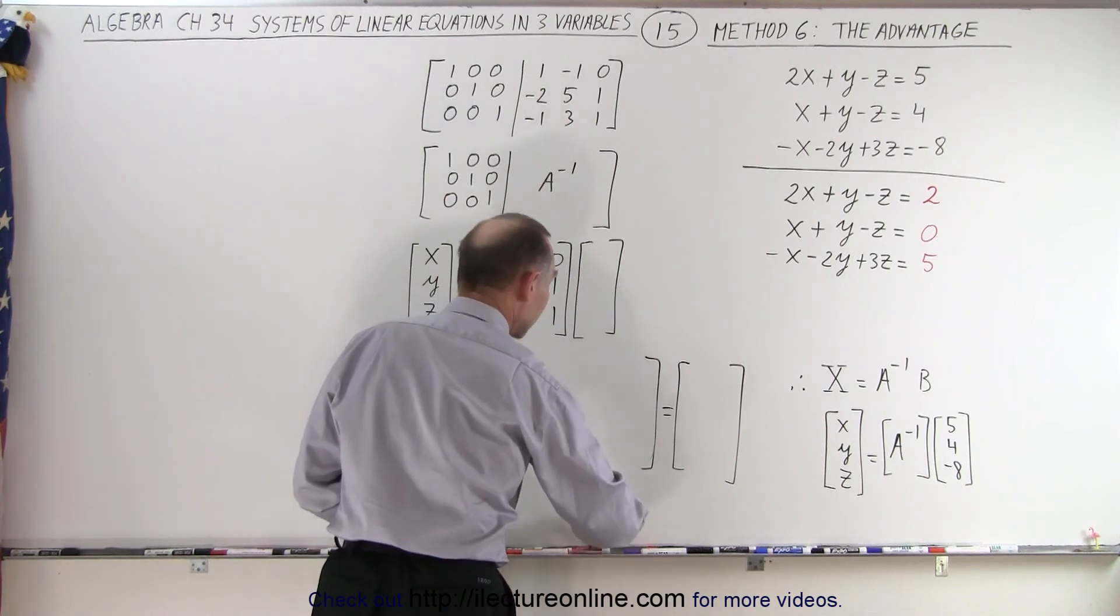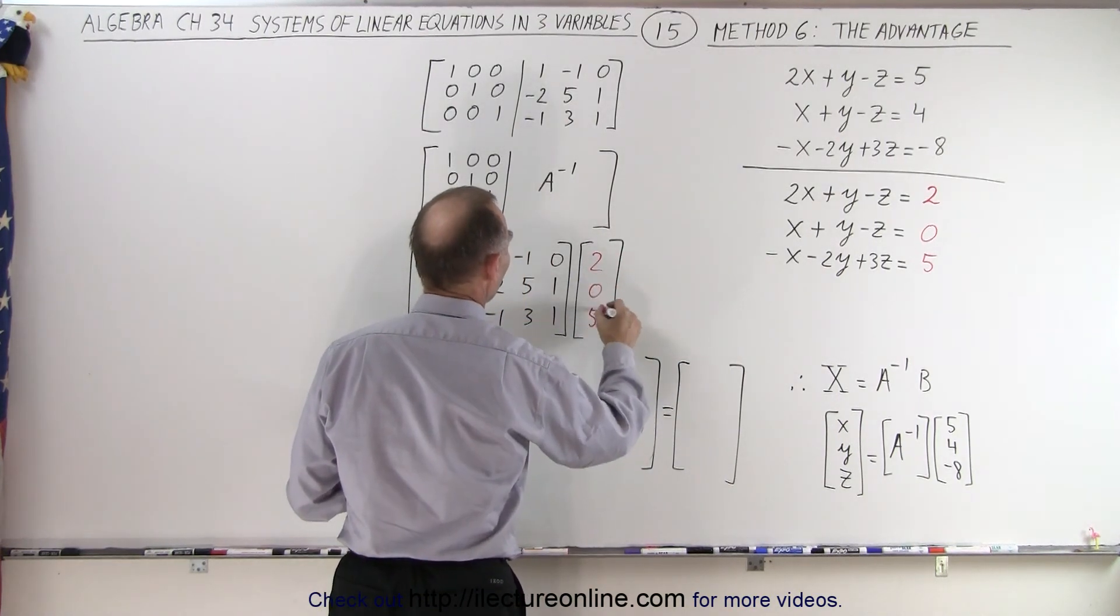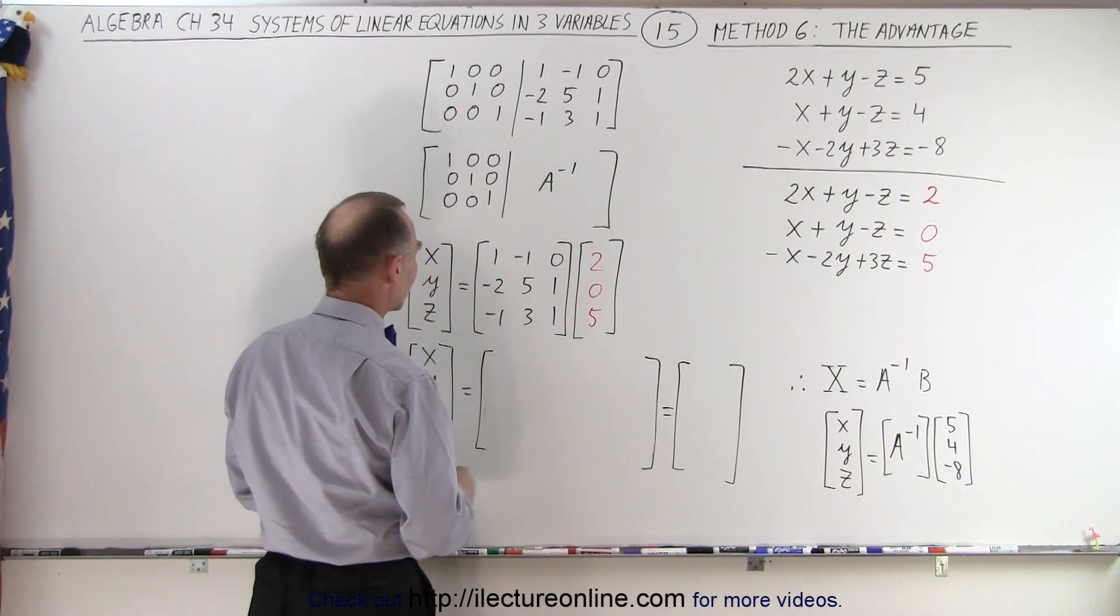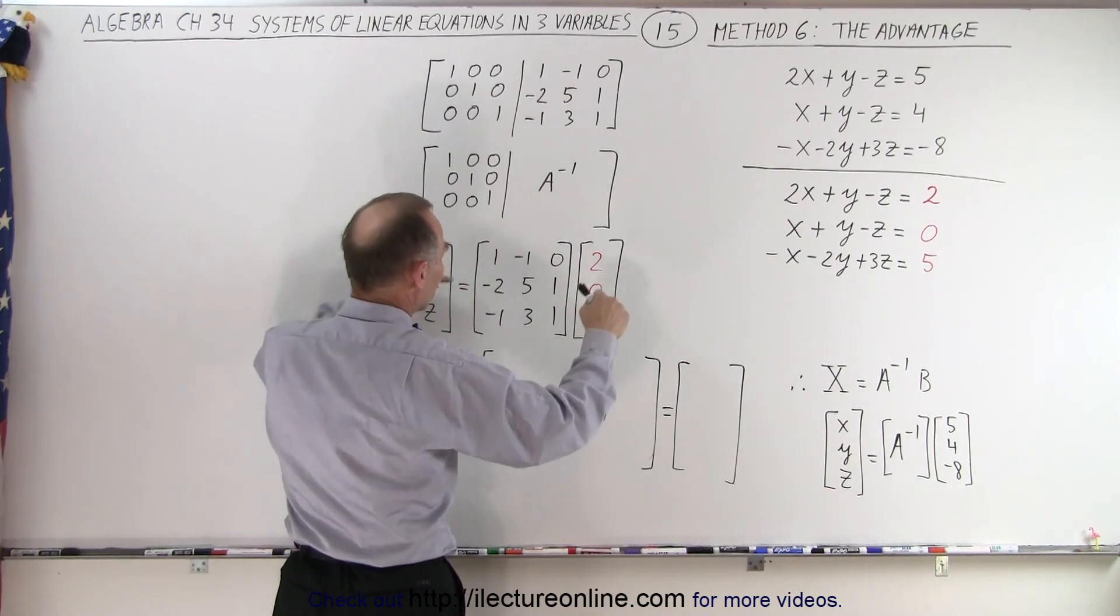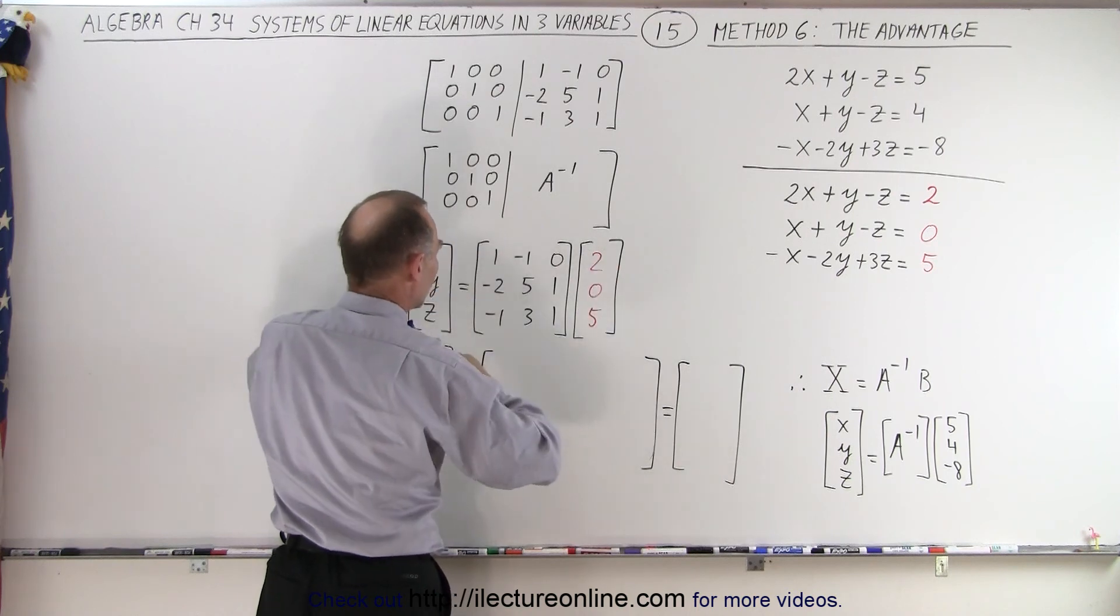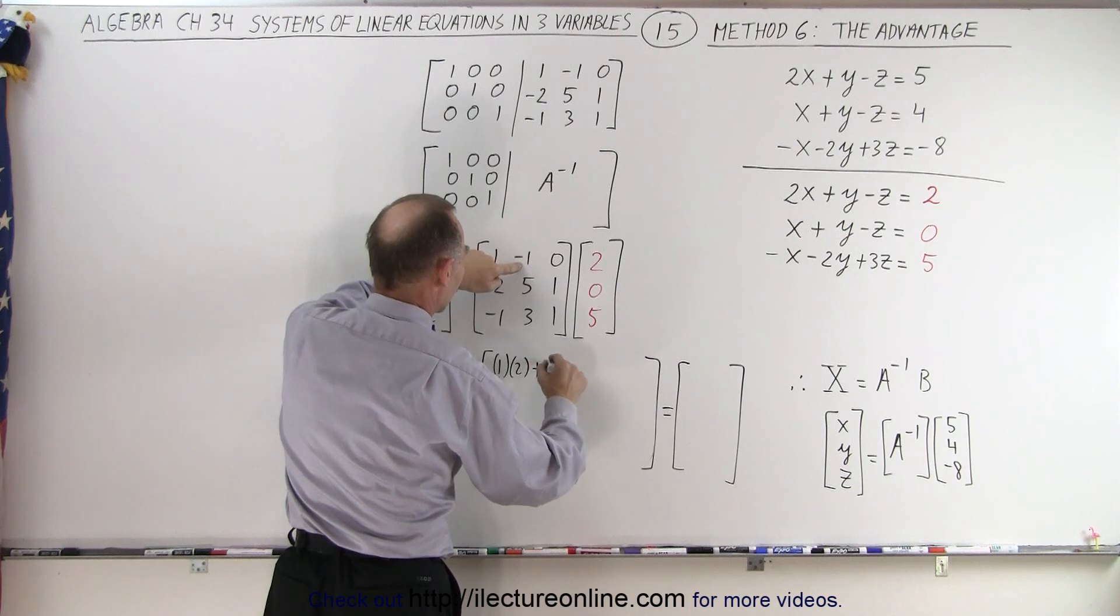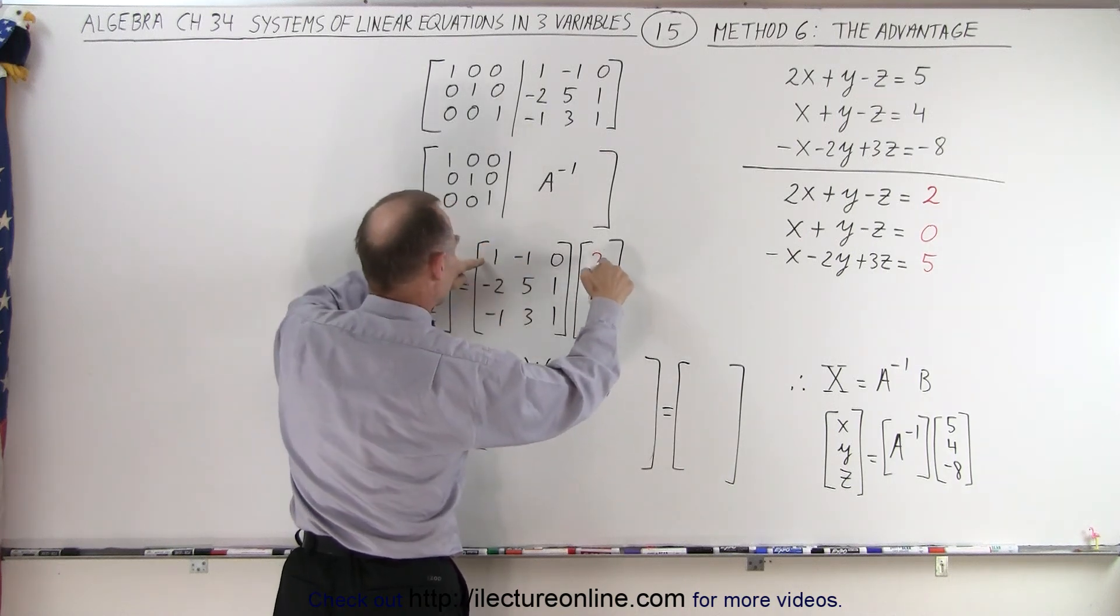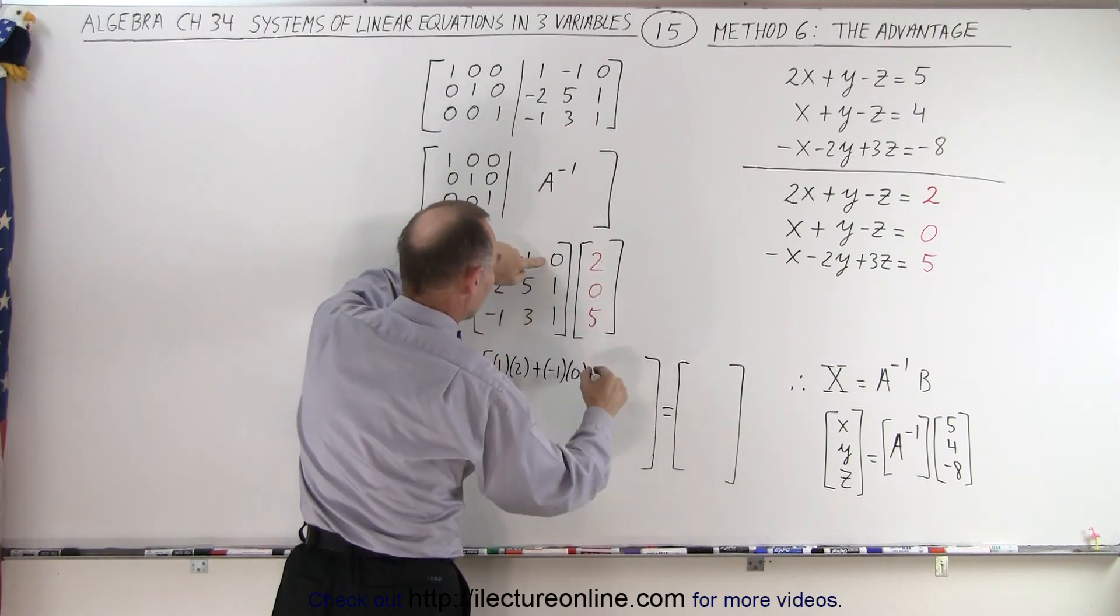So all we need to do here is plug in, and let me use a color here, we'll take 2, 0, and 5. And so what would be the multiplication now? So we keep this very same inverse matrix A because the left side doesn't change. So we're going to multiply for the value for X. We get 1 times 2, negative 1 times 0, plus 0 times 5.